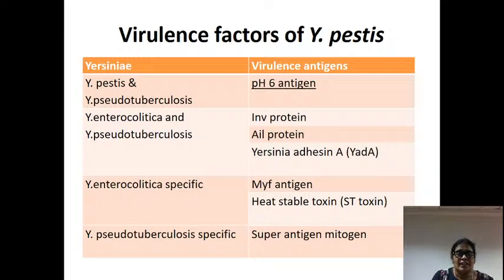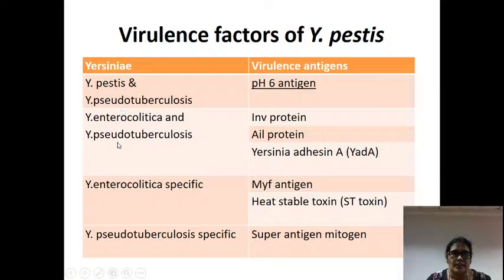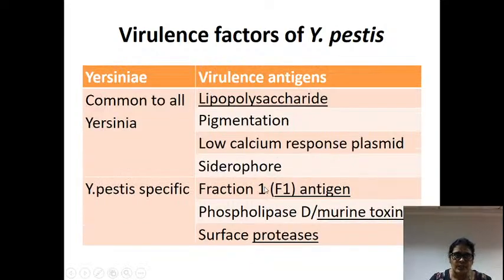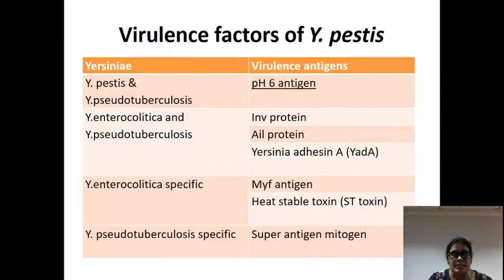The low calcium response plasmid is responsible for the type III secretory system present in the plasma membrane, which injects the F1 antigen and effectors into host cells including endothelial cells. Siderophore inhibits phagocytosis. The F1 antigen is the main antigen responsible for inhibition of phagocytosis — siderophore supports but F1 is the main factor. Phospholipase D or murine toxin is responsible for survival especially in fleas. Surface proteases are mainly for adhesion. The virulence factors to remember: LPS (endotoxin), pigmentation (biofilm), low calcium response plasmid (type III secretion), siderophore, F1 antigen (anti-phagocytosis), murine toxin, surface proteases (adhesion), and Psa adhesin.